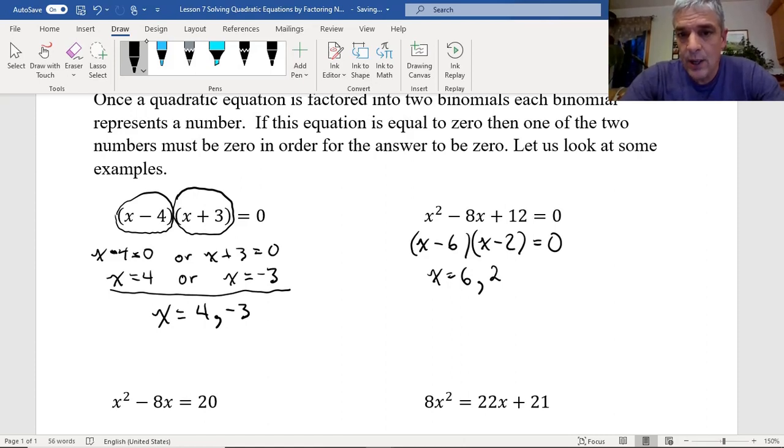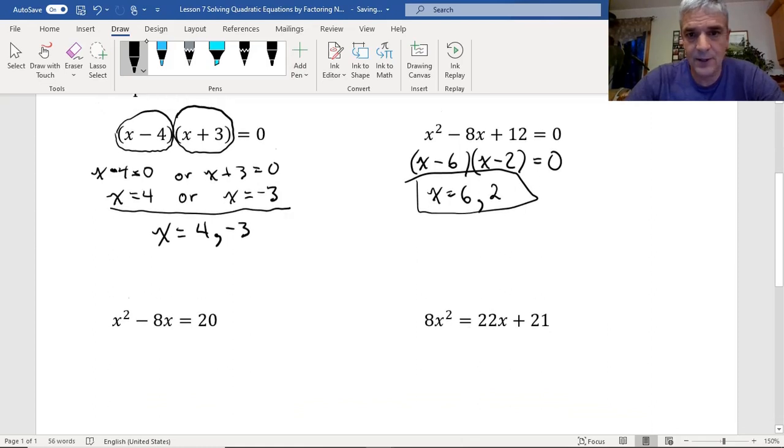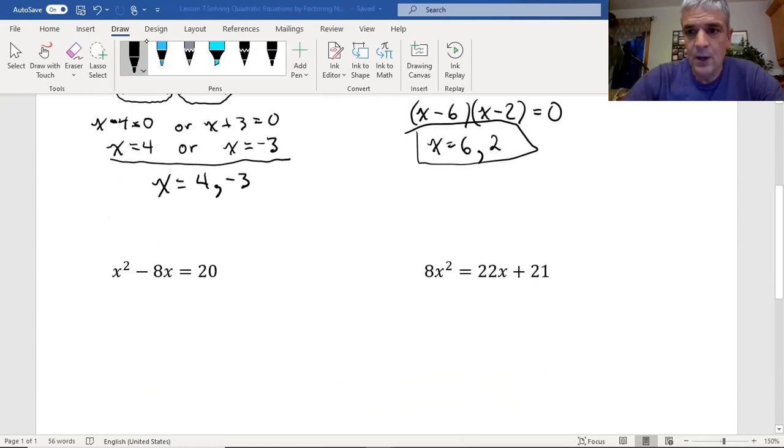So those are the two possible answers. When I put 6 in here, it will be 0. This will be 4. 6 minus 2 will be 4. But it won't matter, because 4 times 0 will be 0. And when I put 2 in here, 2 minus 2 will be 0. But when I put 2 in over here, this will be minus 4. But minus 4 times 0 will still be 0. So these are my two answers. And I often put a box around my answers when I get them. I like that. It just makes life easier for the teacher when they're marking.